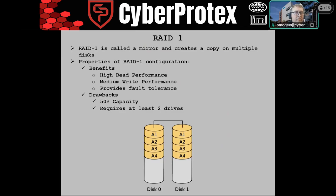Whereas RAID 1 is creating a mirror — a carbon copy of itself. This has decent benefits and gives you fault tolerance because it is literally a mirror. But the drawback is that you only get 50% capacity in that regard.